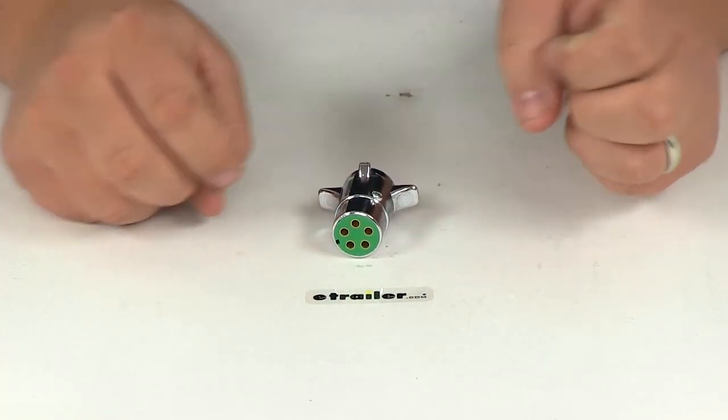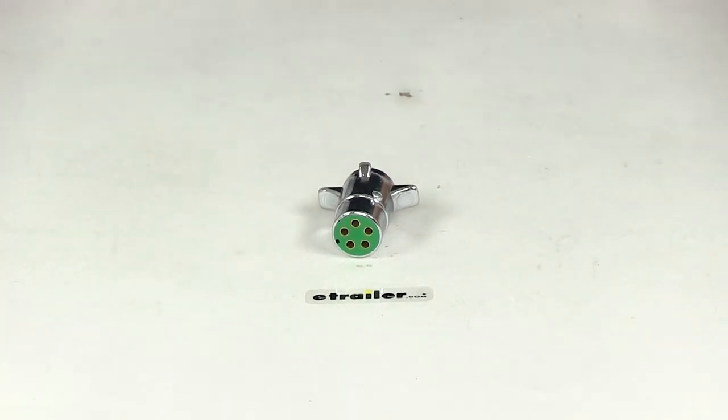That's going to do it for our review of part number PK-11501, the Pollack five-pole round pin trailer wiring connector.